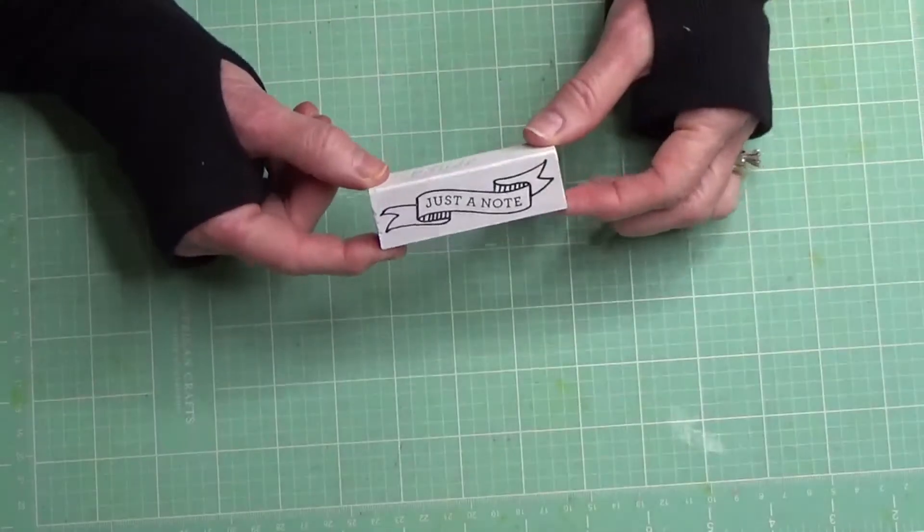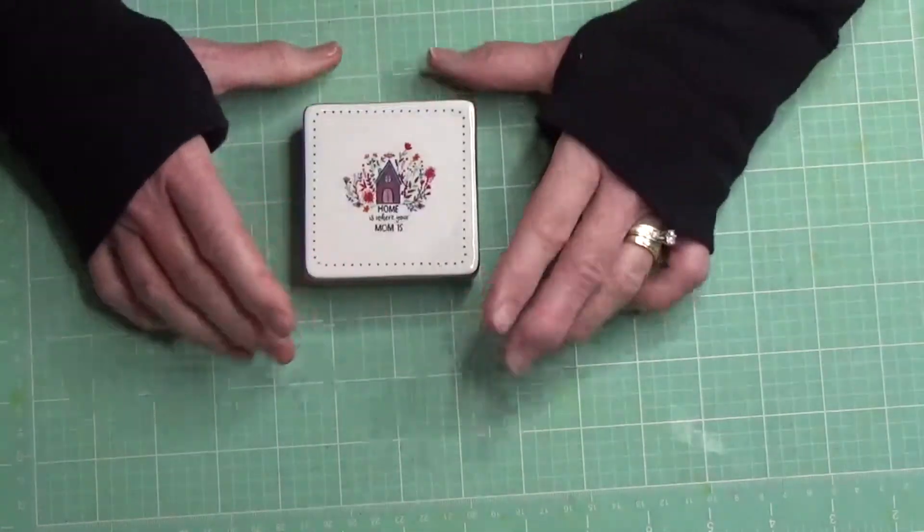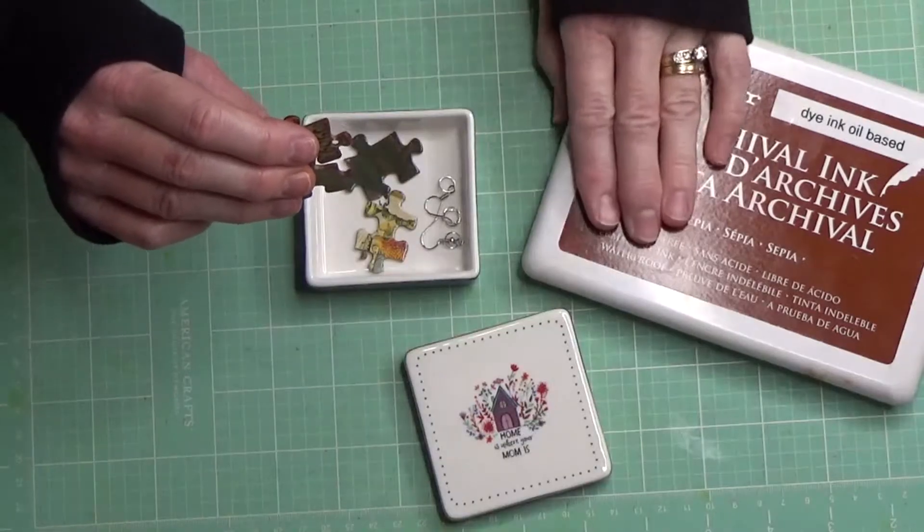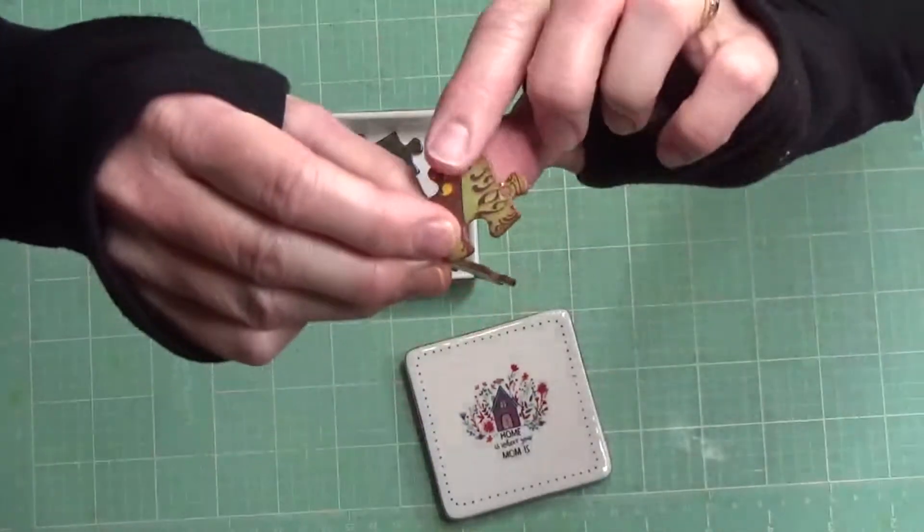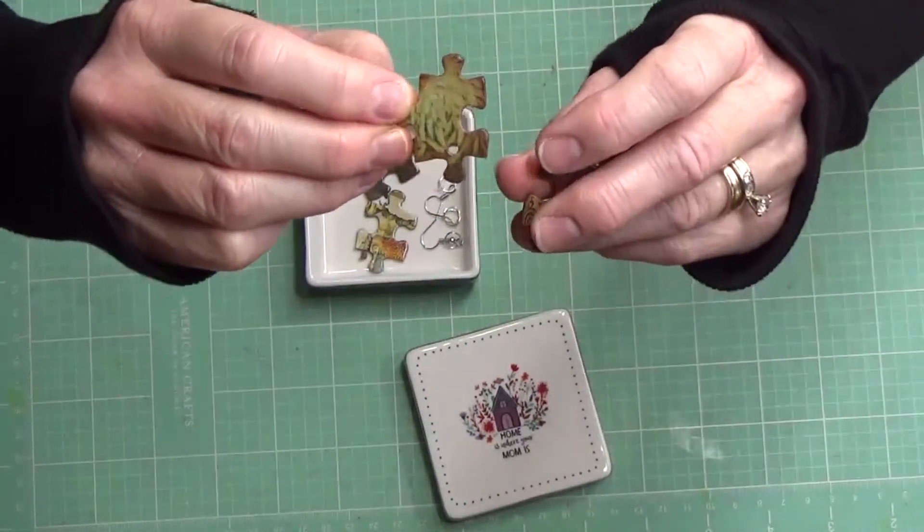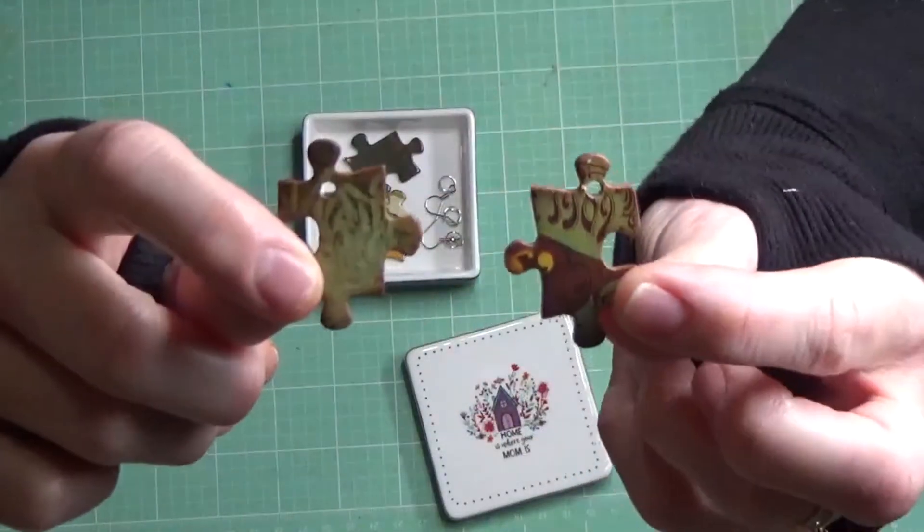You could even use these as decorations in your house. I just think it's so much fun. What a blast. Now onto our puzzle pieces. Using the sepia color of the Ranger archival ink and a little sponge, I edged all the sides and also added some Mod Podge to that. So it's a little bit glossy. I just did two coats and we're going to turn these into a pair of earrings.